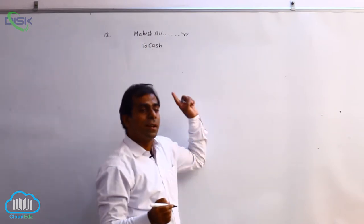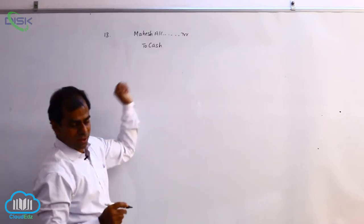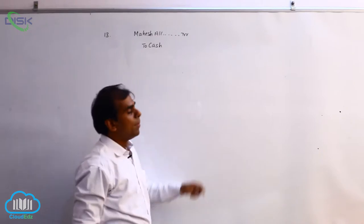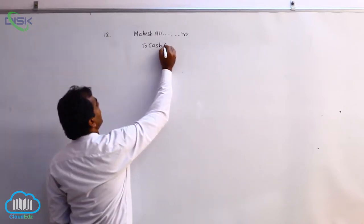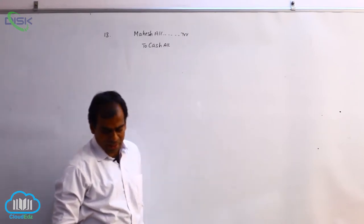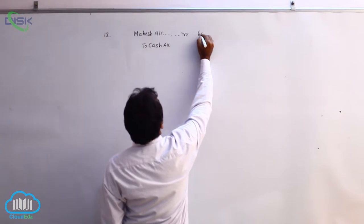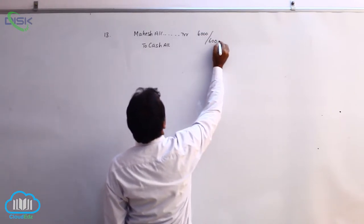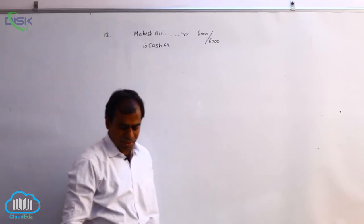Cash is a real account, and the rule is debit what comes in and credit what goes out. Since cash is going out, cash has to be credited. The journal entry is Mahesh account debit to cash, the amount being 6000, and the narration is cash paid to Mahesh.